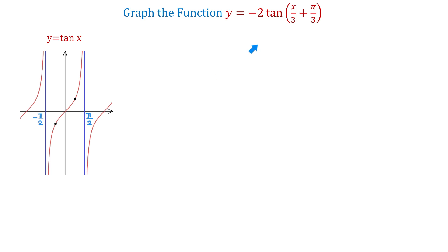Similarly, our function completes one period as the expression x over 3 plus pi over 3 changes between negative pi over 2 and positive pi over 2. To find the values of x for which this function completes one period, we have to solve the following inequality: x over 3 plus pi over 3 is greater than negative pi over 2 and is less than positive pi over 2.